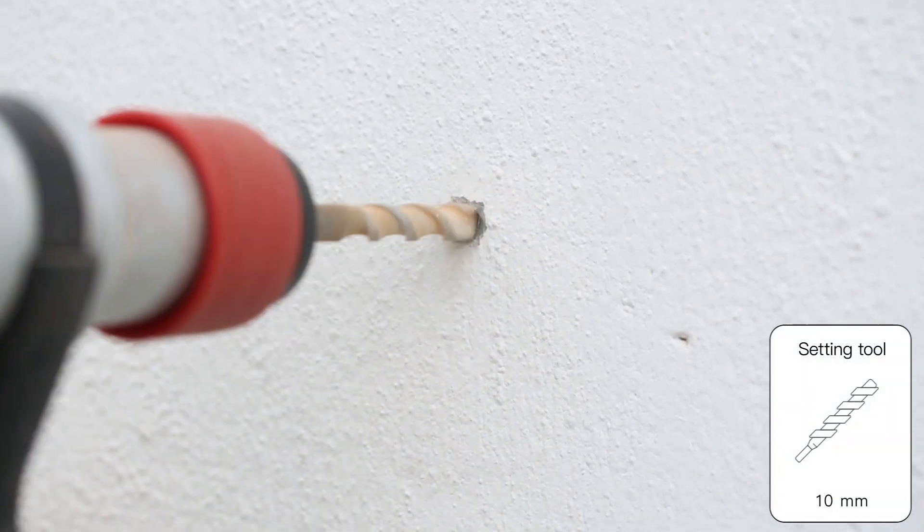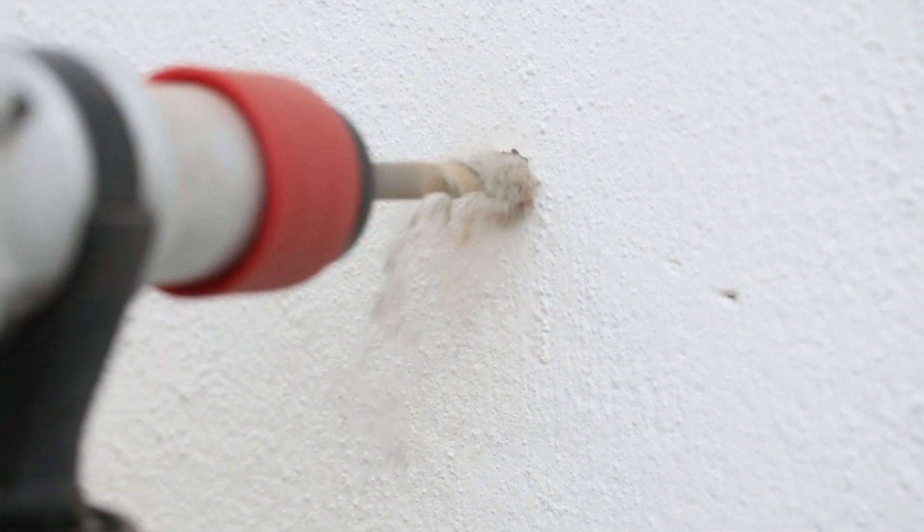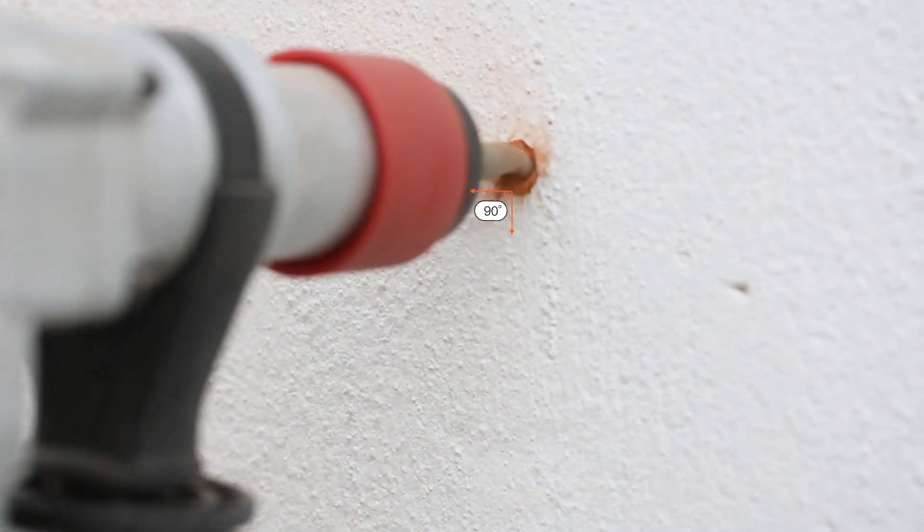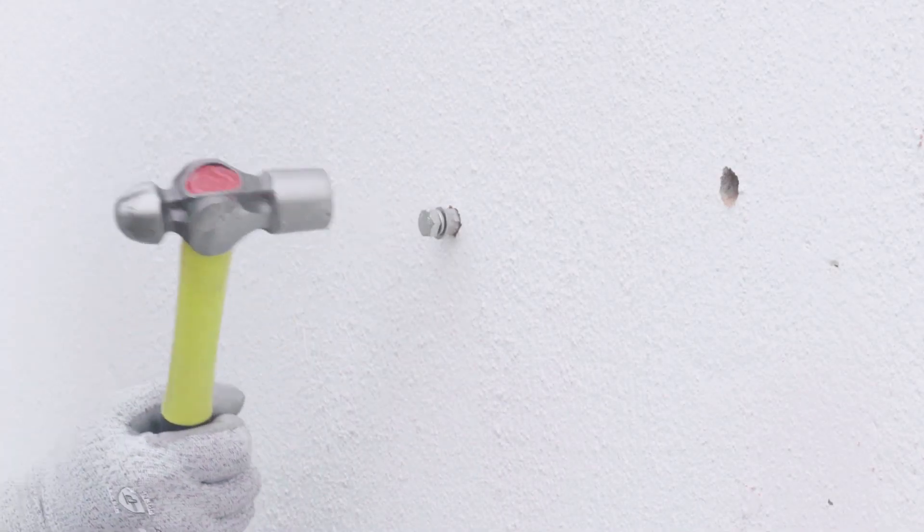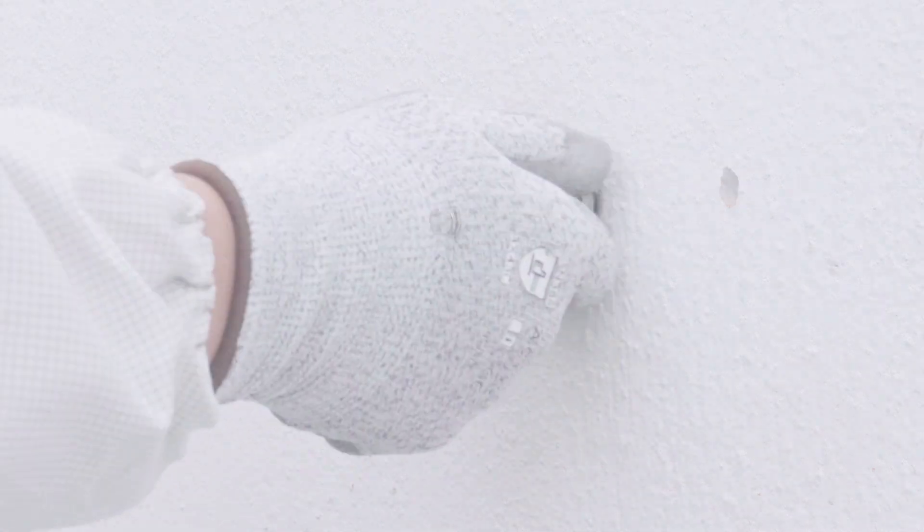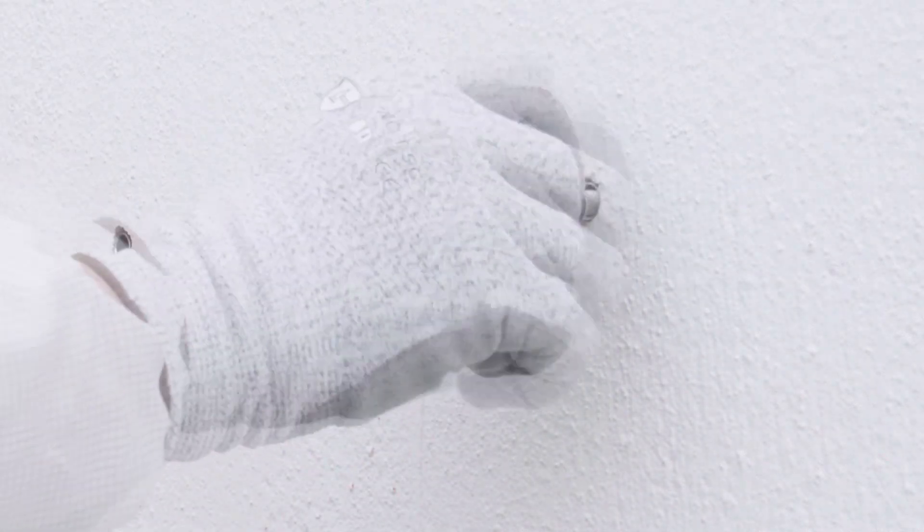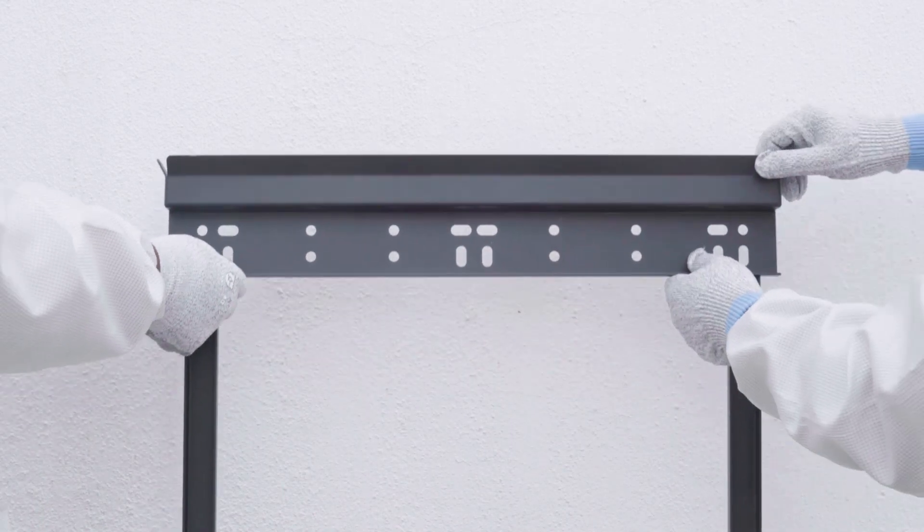Drill holes with a drill. After drilling holes in the wall, place screw anchors into the holes. Then attach the wall mounting bracket to the wall using the self-tapping screws delivered with the inverter.